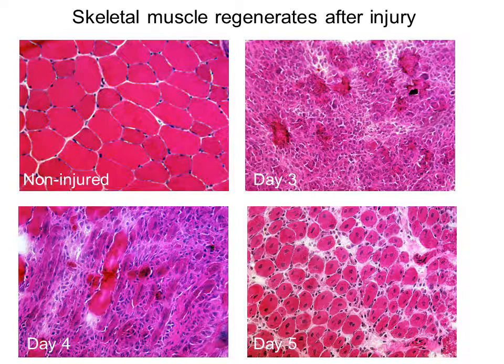This is a muscle fibre surrounded by connective tissue shown here in white — this is a normal, non-injured mouse muscle. If you inject the muscle with a snake venom, the muscle is completely destroyed, as you can see — there are no visible muscle fibres. But a day or so later, we can see the beginnings of newly regenerated muscle fibres, and this regeneration continues with time after injury to almost completely regenerate the muscle.